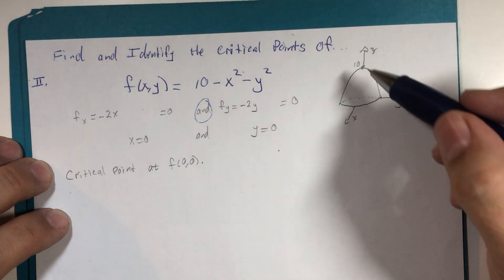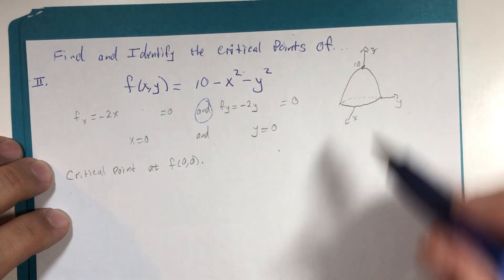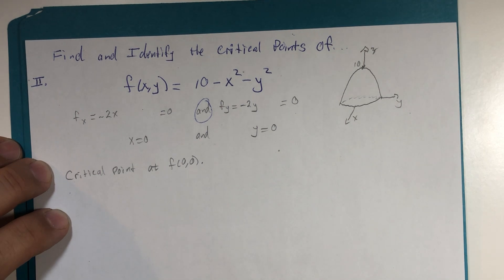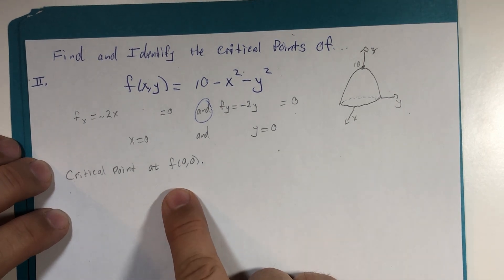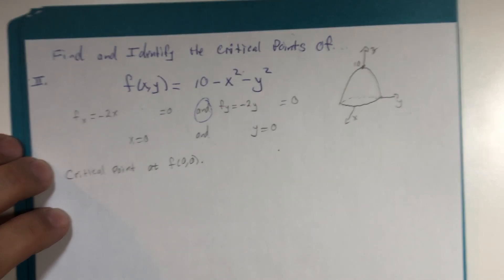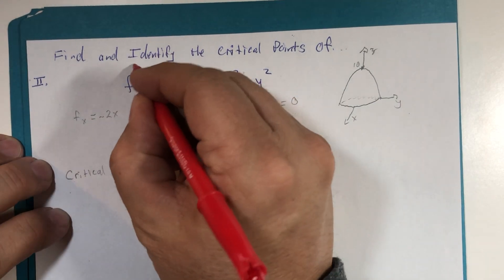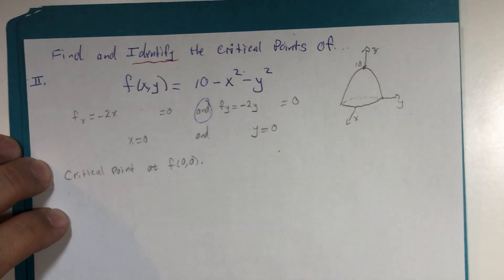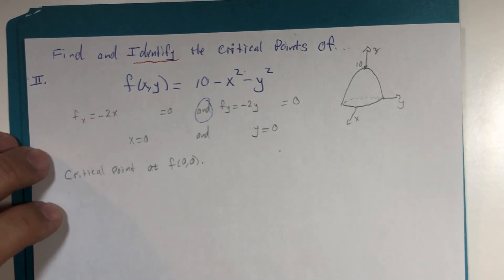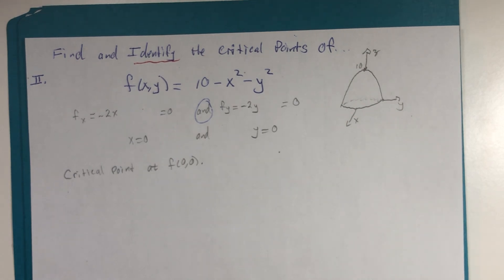Now again, we already know from the graph that this would be a maximum, but now we're going to look into the portion of this problem that would be called identifying, or determining what type of critical point it is: maximum, minimum, and then the other is called a saddle point. So I'm going to do a quick little switcheroo here.